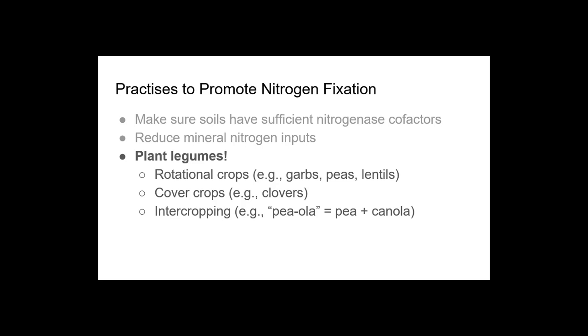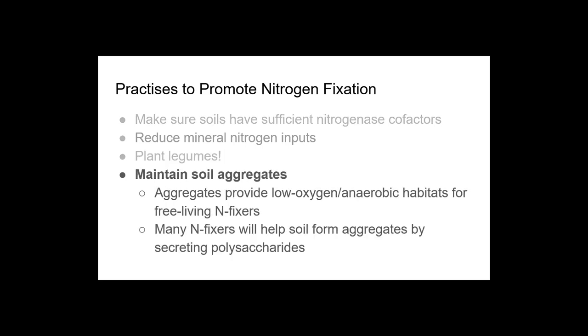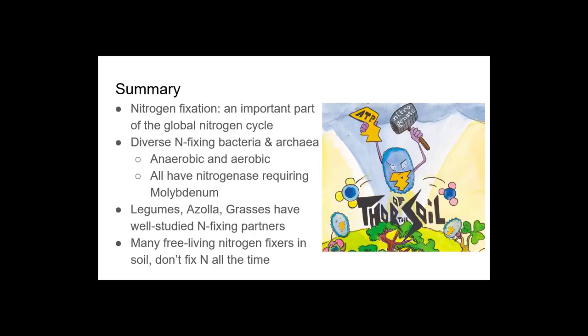Legumes, obviously there's lots of legumes. There's cool intercropping work being done that hopefully Isaac will tell us about with legumes and canola. And then maintaining soil aggregates. These soil aggregates provide low oxygen grading into fully anaerobic habitats for free living nitrogen fixers. Many nitrogen fixers will build these aggregates around themselves by secreting polysaccharides and other compounds.